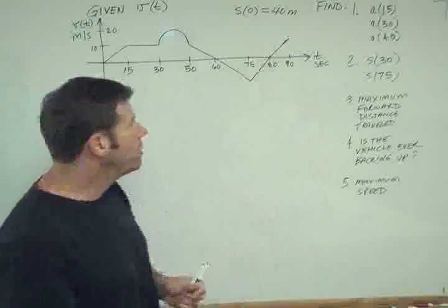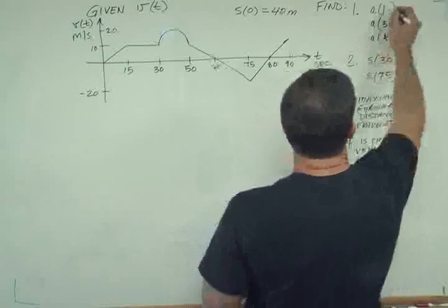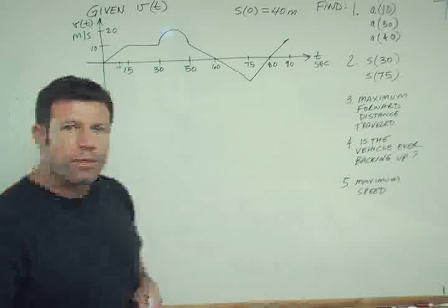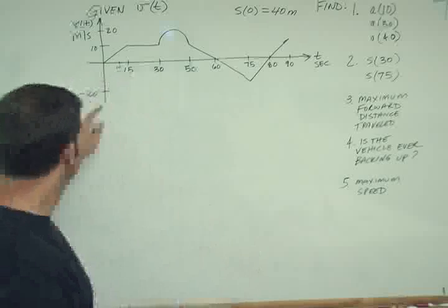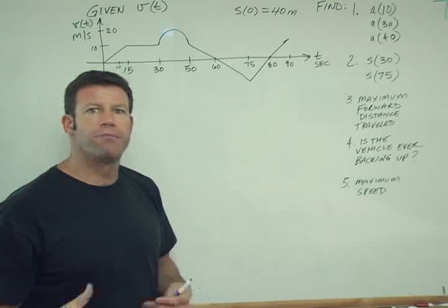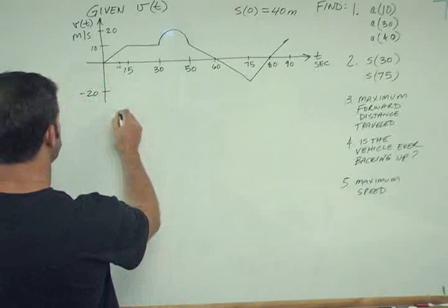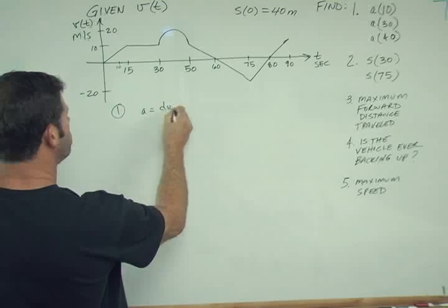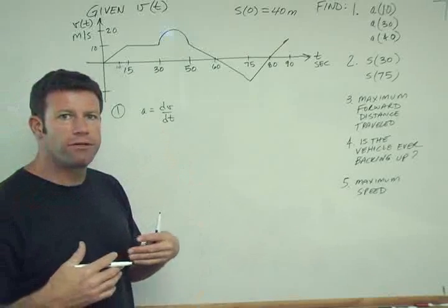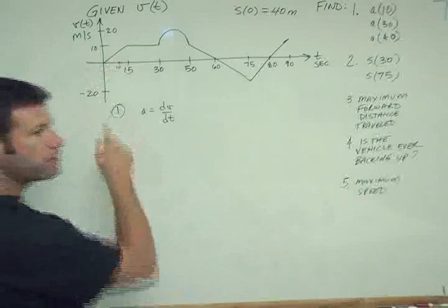So now let's try to analyze the questions. The first one, I'm going to change the value here and say find a at 10 seconds, which is right here. So we don't have an equation to take a derivative of. Now we could potentially try to write this as an equation, fit the equation to the line, and then take a derivative. That would be the extremely long way to do the answer. Because we know that the acceleration is the derivative of velocity with respect to time.